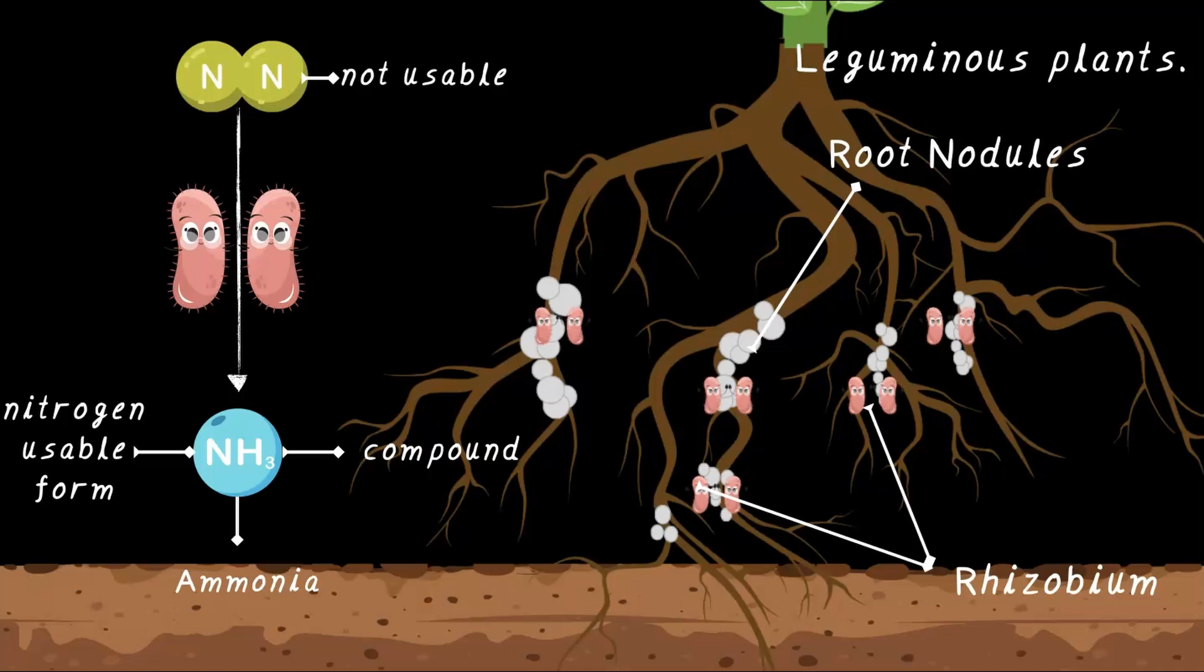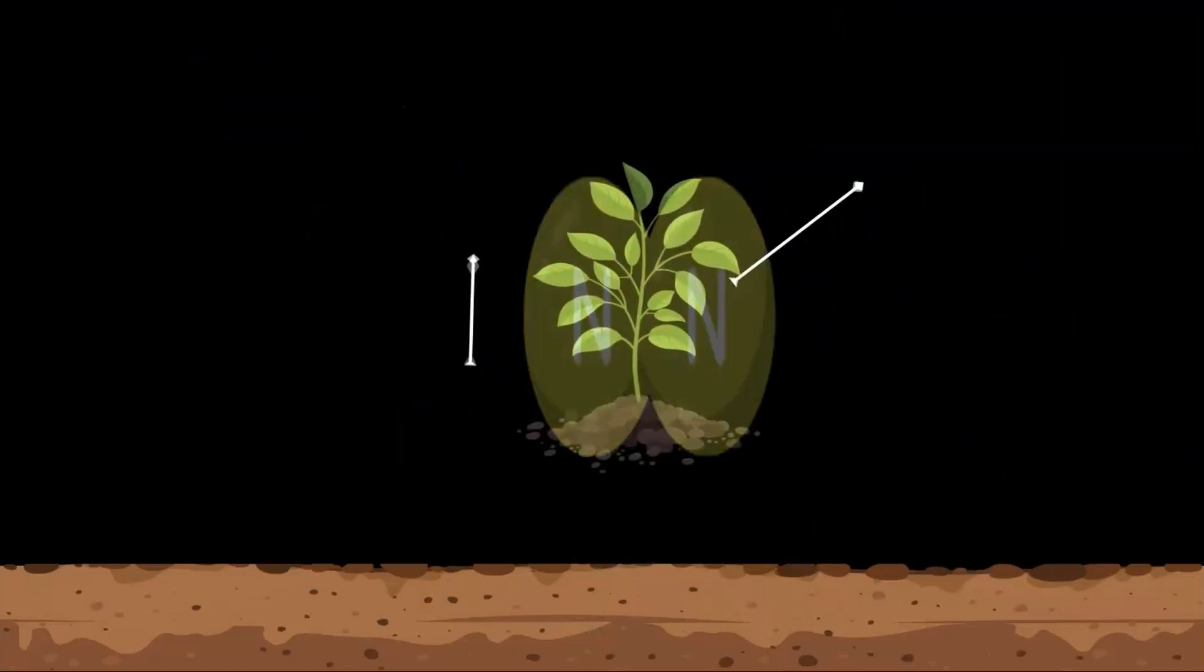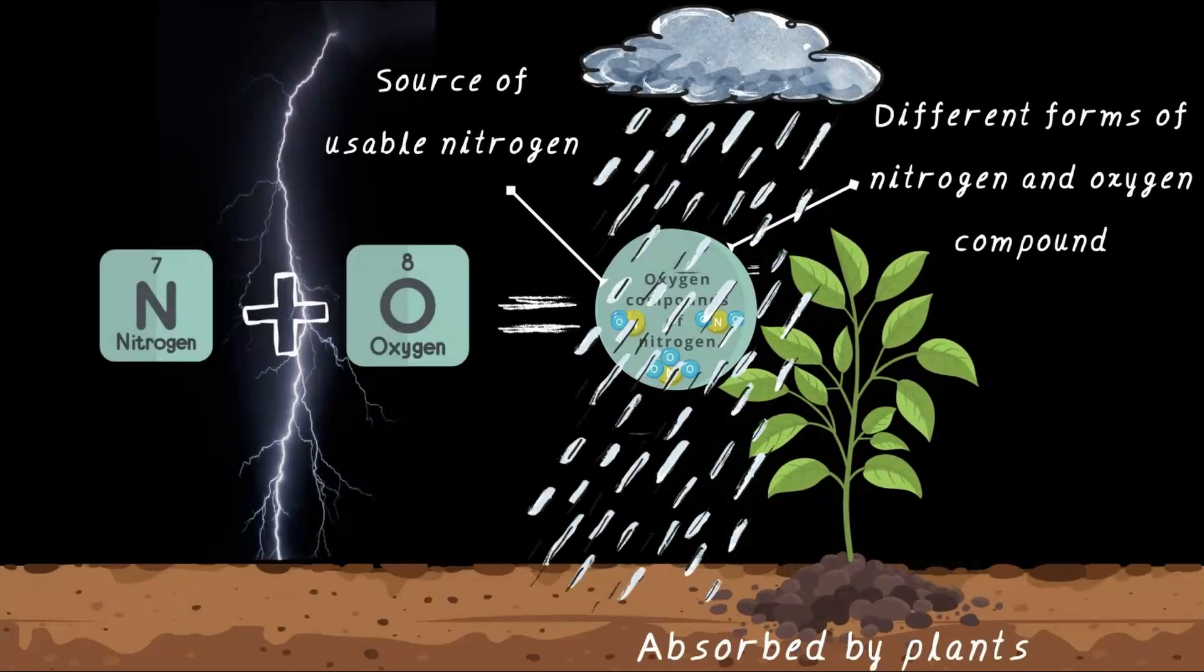But wait, what about plants that don't have root nodules? What about non-leguminous plants that do not have rhizobium? What do they do? That's where lightning comes in. Lightning literally helps fix nitrogen again. When it strikes, it combines nitrogen and oxygen in the air, forming nitrogen compounds. And when it rains, these compounds mix with rainwater and get carried down to the soil. The soil absorbs the nitrogen compound, making nitrogen available for the plants. And just like that, thanks to rhizobium and lightning, plants get the nitrogen they need to thrive.